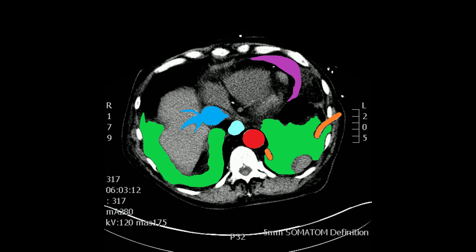The inferior vena cava is now detached from the right atrium. We have a left and right pleural effusion — the orange left pleural catheter and in purple the pericardial effusion. In red, the descending thoracic aorta; in light blue, the esophagus; in dark blue, the inferior vena cava with the hepatic veins draining into it.